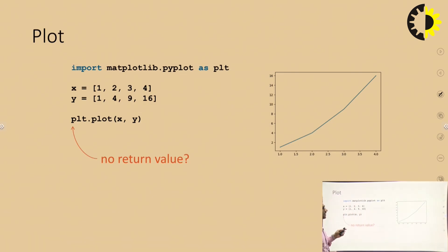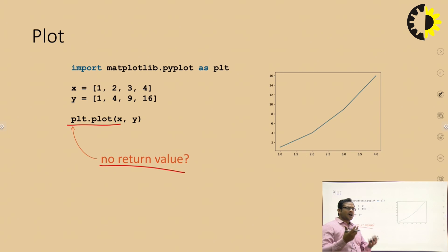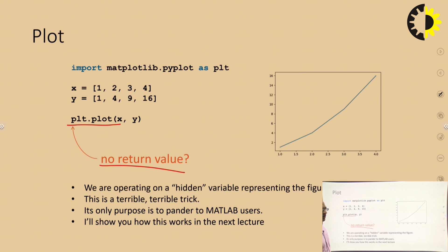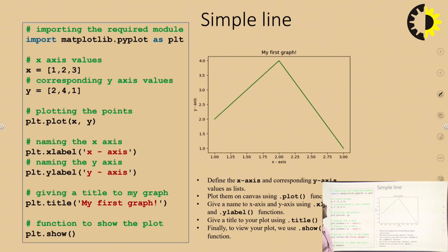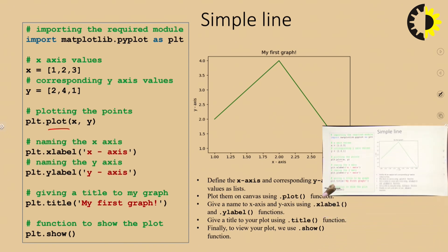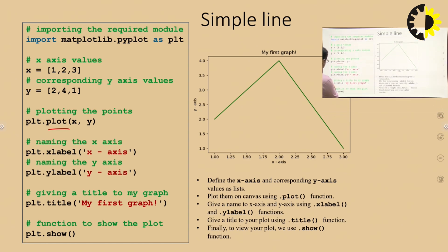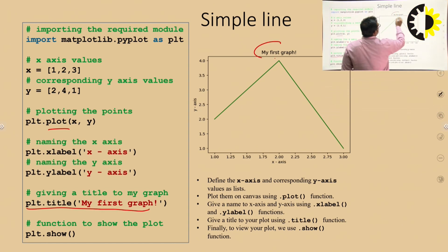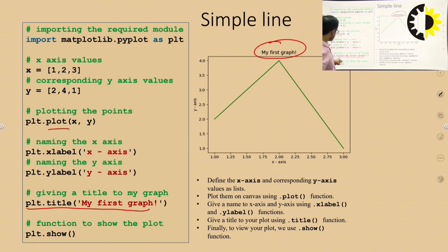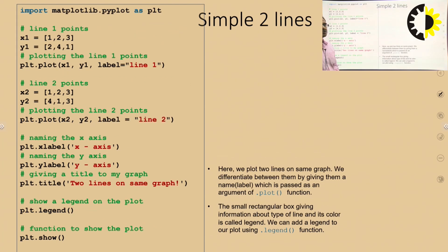The plot function has no return values - it just generates the graph. To show it, call plt.show(). For a simple line graph, you just use the plot function. One more function is title - plt.title() lets you set the title, for example 'My First Graph', as shown here.